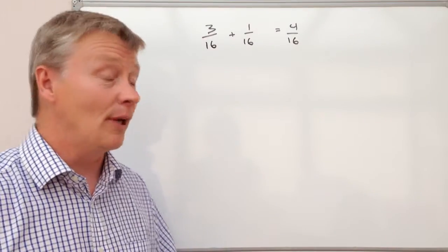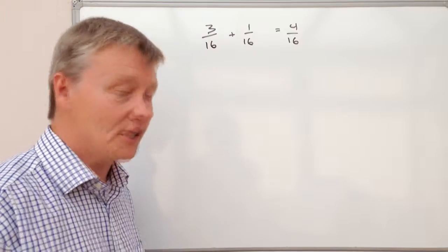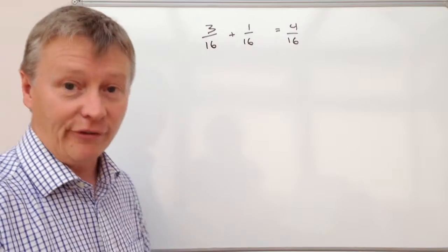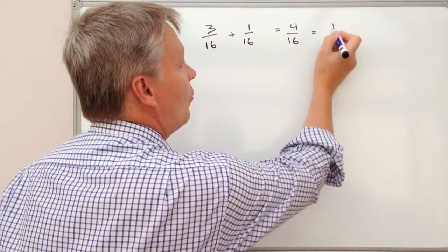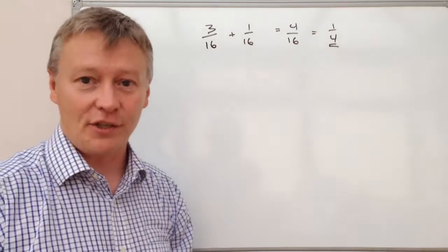The only thing you need to remember is that when you're dealing with fractions, you need to make them as small as possible. So what we do is we divide the top number by 4 and the bottom number by 4, and that becomes 1/4. So that would be the answer to this question.